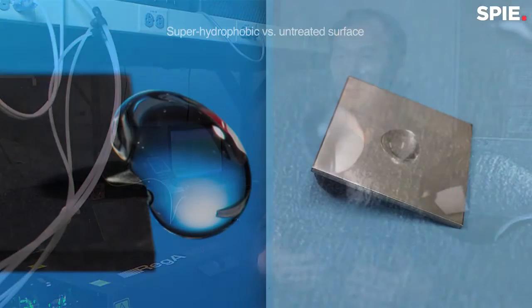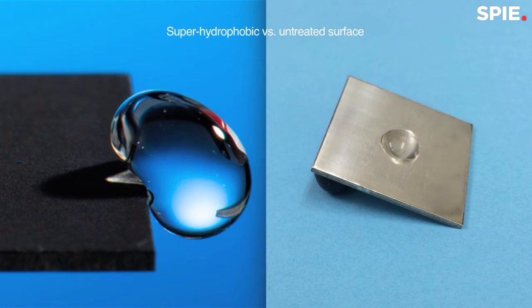We moved our research forward. The next thing we did was process the material surface and dramatically change its wetting property. In terms of wetting property, a surface can either attract water or repel water.